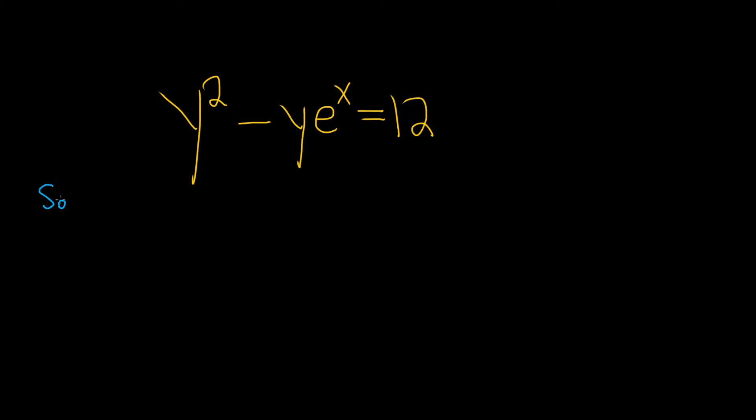So we start a problem like this by taking the derivative of both sides with respect to x. You can just start by taking the derivative or you can actually write down that you're going to take the derivative. I'm going to show an extra step this time and just indicate that we're going to take the derivative. So the derivative of the left hand side, d/dx of y squared minus y e to the x is equal to the derivative of the right hand side.